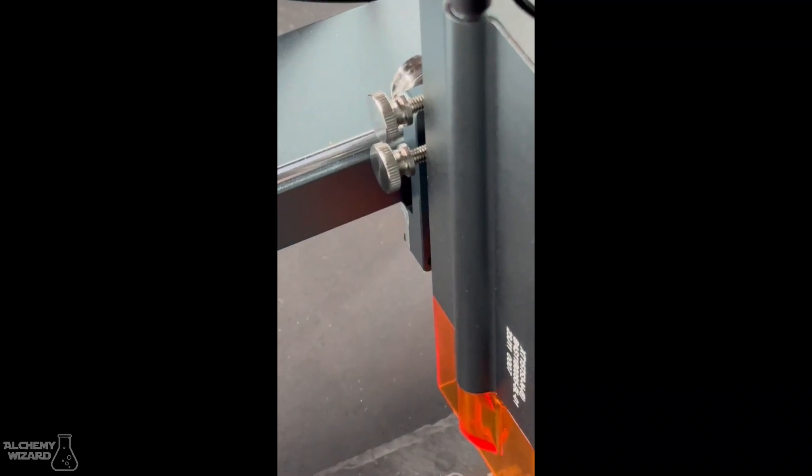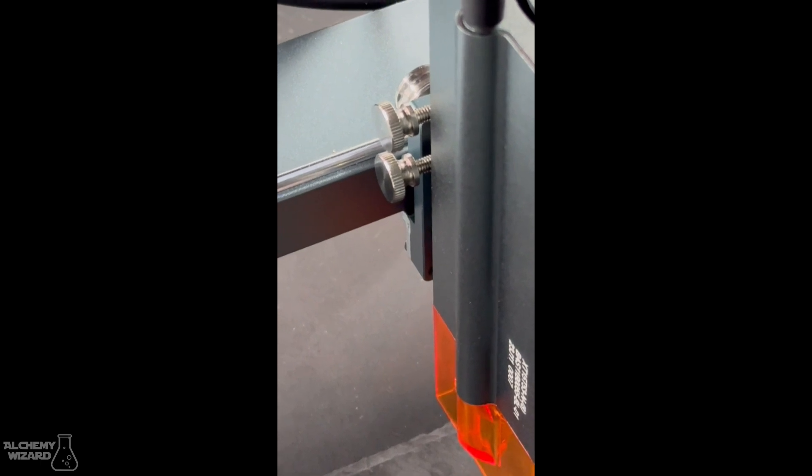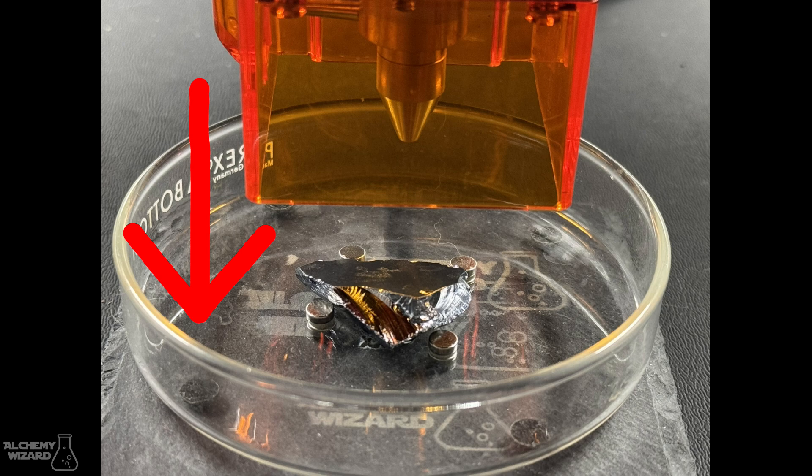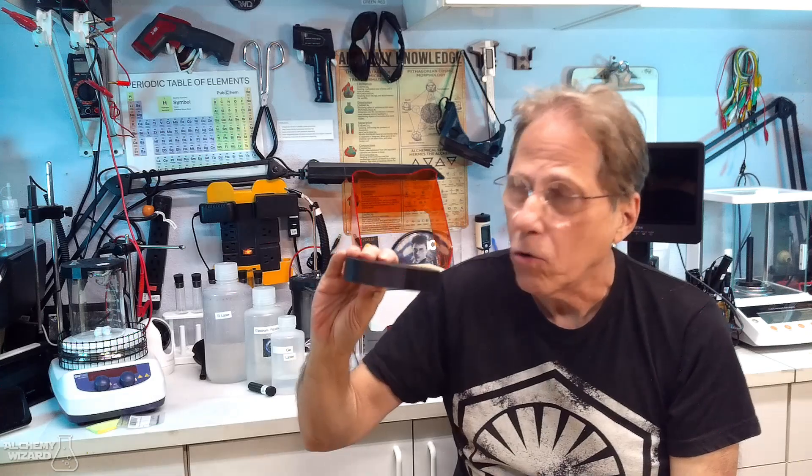If you don't tighten those screws enough, if your petri dish is open and you got liquid in it, it'll just jam into that liquid. That ain't going to be too good for the laser, I don't think, or your sample for that matter. It could screw up the laser.